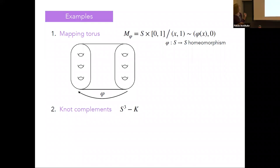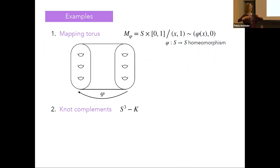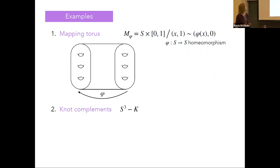Why is it called the mapping torus? The idea is you're building it like you build a torus when you take a circle across an interval and then glue the circle back up to itself, but this is a more general construction. You can also call this just a surface bundle over the circle.